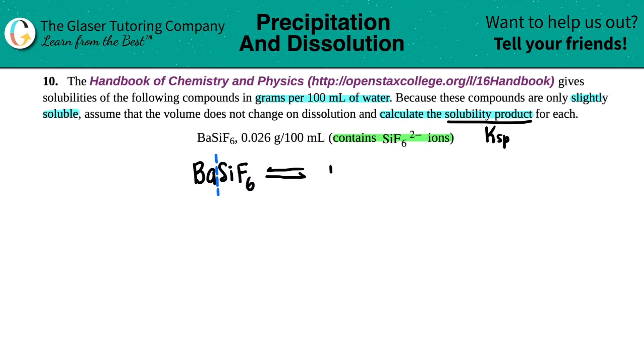So we have Ba and then plus the SiF6. They did tell us that the SiF6 is a negative two charge. But now what's the charge of the barium? A couple of ways you could do this. We could go through the way of crisscrossing finding the charges, or we could say that barium is in group two on the periodic table, so it's always going to be a plus two charge. I think that way is easier.